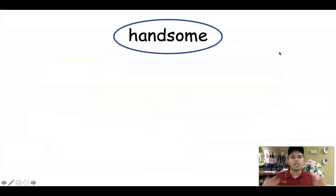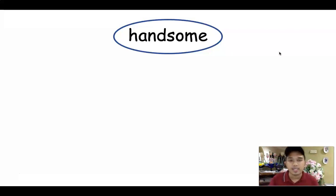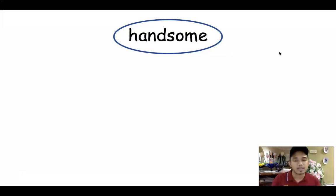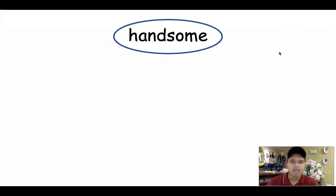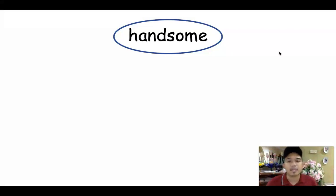Not all words can add -er or -est. For example, 'handsome' — you don't say handsomer or handsomest. Long words like 'intelligent' — you don't say intelligenter or intelligentest. Some shorter words like 'boring' also use 'more boring' and 'the most boring.' You need to try yourself — Google adjectives, comparative adjectives, superlative adjectives. There's a chart online showing which words change and which don't.